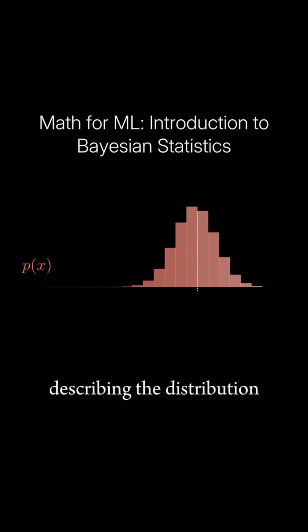An interesting quantity describing the distribution of x is its expectation, usually noted E of x. It is basically the average value that you can expect when sampling from x, and it can be computed using the integral of the probability density function.